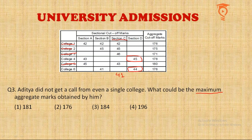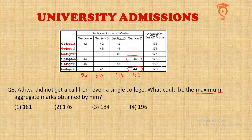For the remaining Colleges 4 and 6, I fail Aditya in section D alone. If he scores 43 in section D — just below the required cutoff — he will not be called by College 6 or College 4 either. Now, with Aditya disqualified from all colleges, I maximize his score in the remaining two sections — giving him the highest possible marks there. This way, I maximize his total aggregate while ensuring he receives no calls.